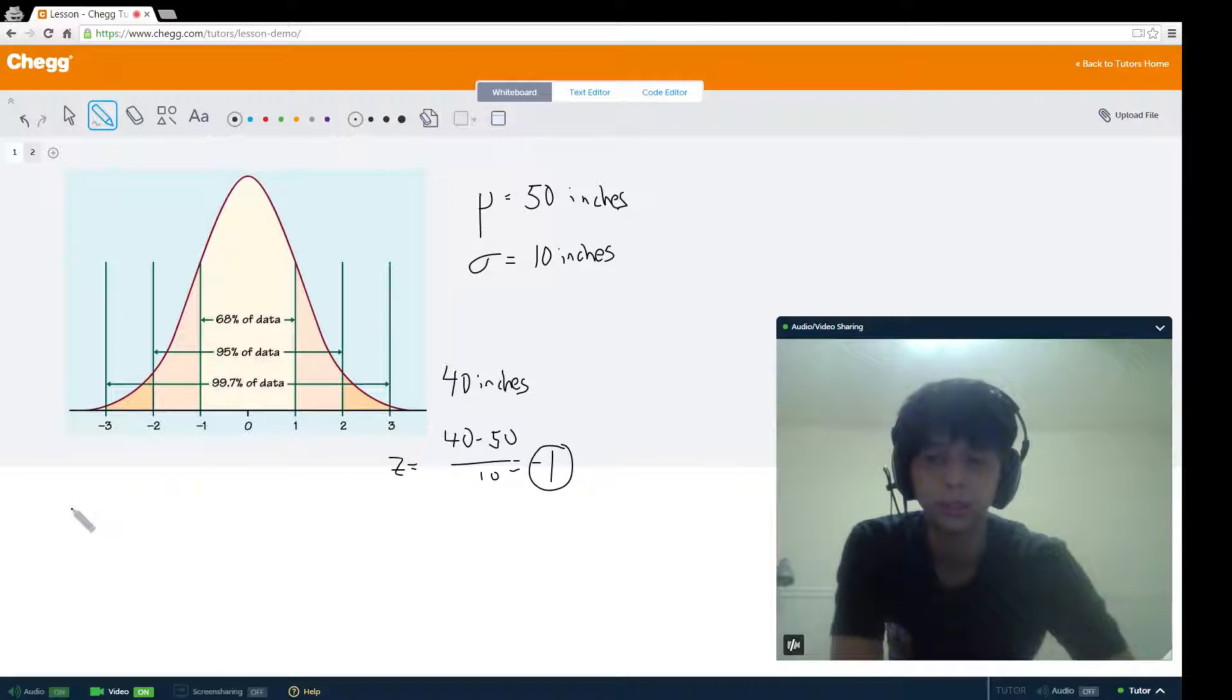You can use this formula to back-calculate your observation, which is your x. This time you know your z but you don't know your x. Let's start with the negative 1. Actually we already know the negative 1, it's 40, right? So let's calculate the 1 using this formula.